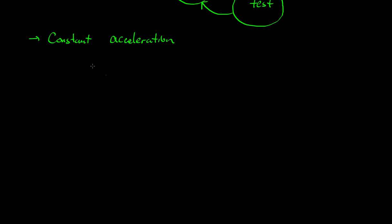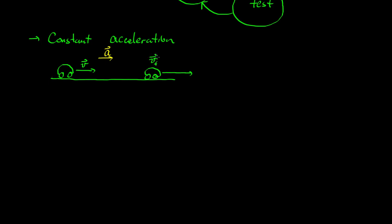For this model we have to make a couple of assumptions. We have some car that's getting faster — accelerating — moving in a direction with some velocity, and an acceleration in that same direction, so the velocity is growing. The first assumption is constant acceleration. That seems obvious, but we have to state it: the object is moving at a constant acceleration.